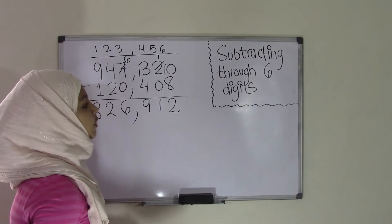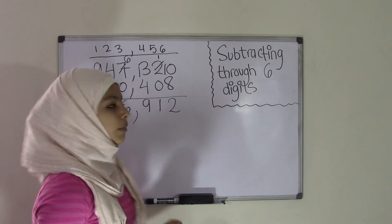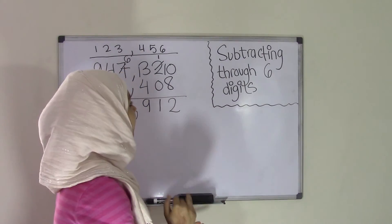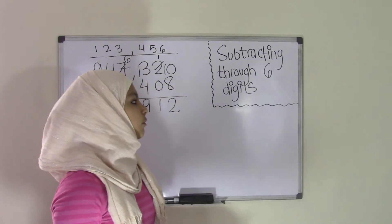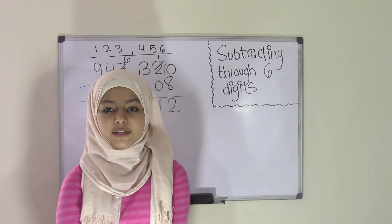So that's that for subtracting through six digits. Now I know we have to deal with large numbers, but this is really easy as long as you take it step by step and go from right to left and borrow when necessary. Now keep on watching for further coming up videos. And we'll see you guys next time. Bye!